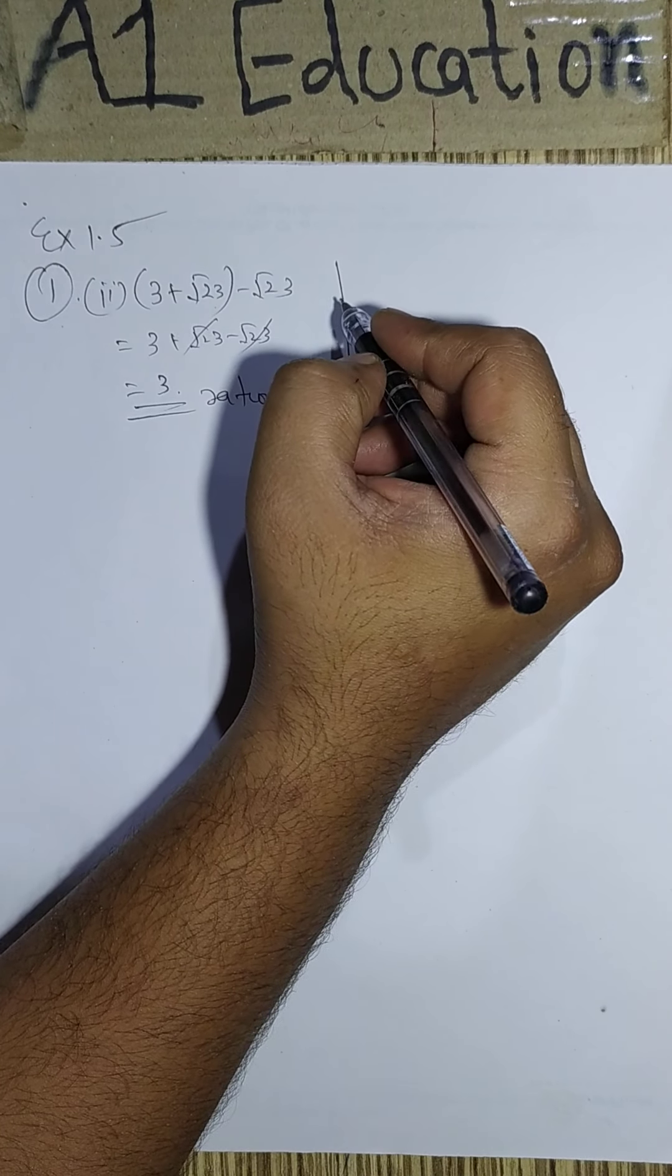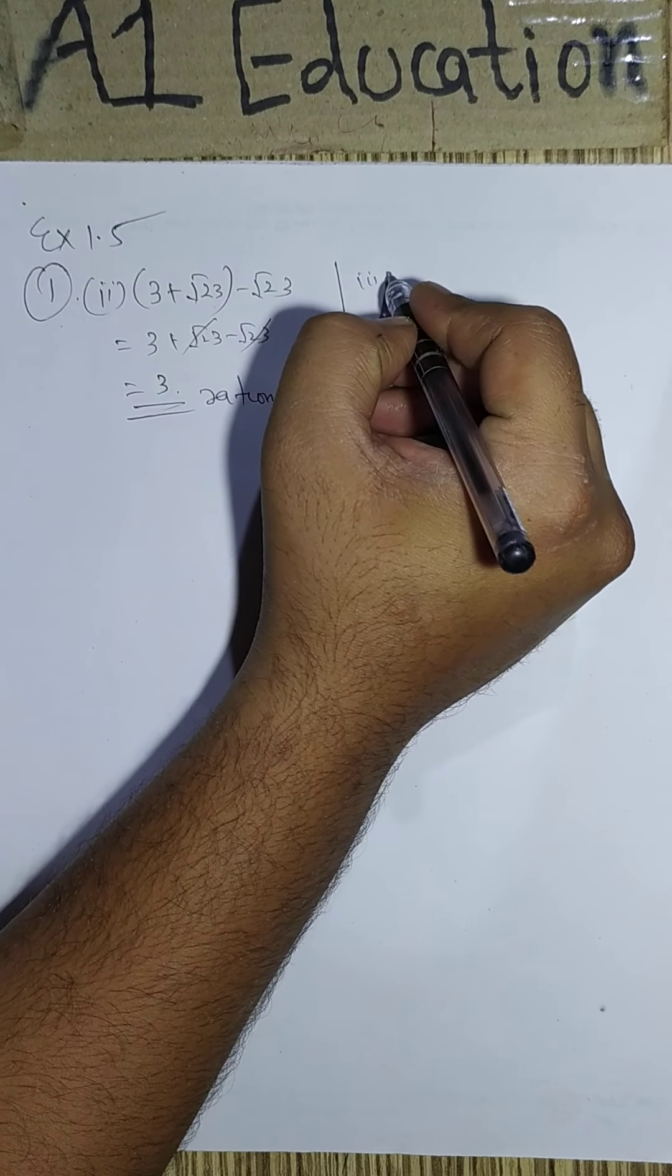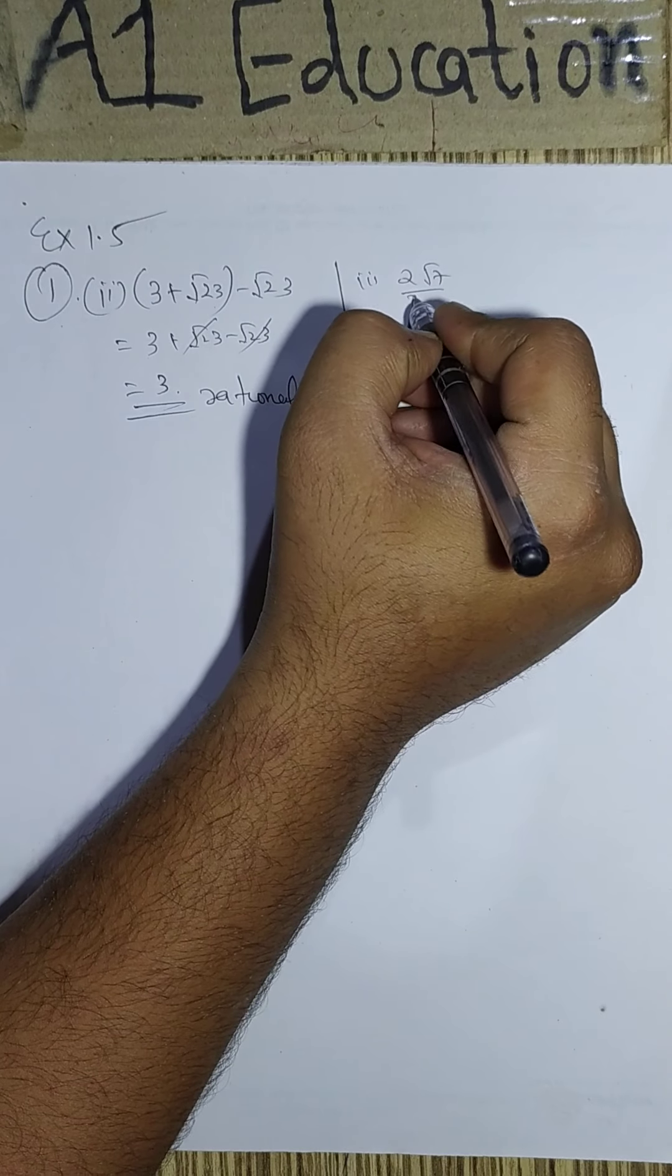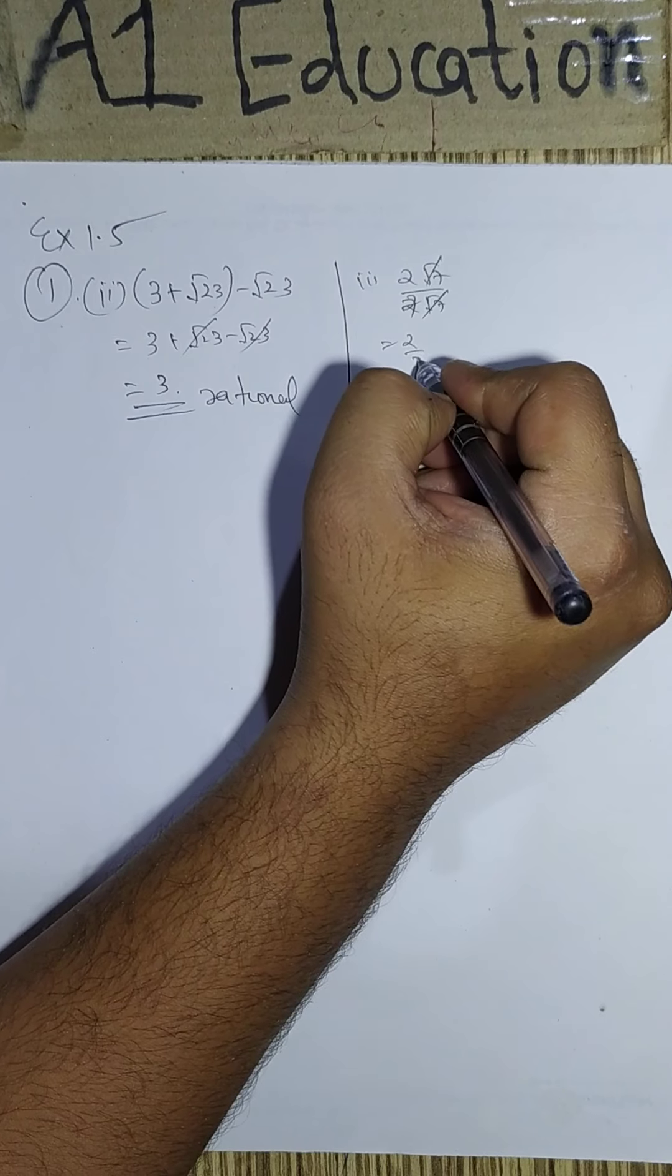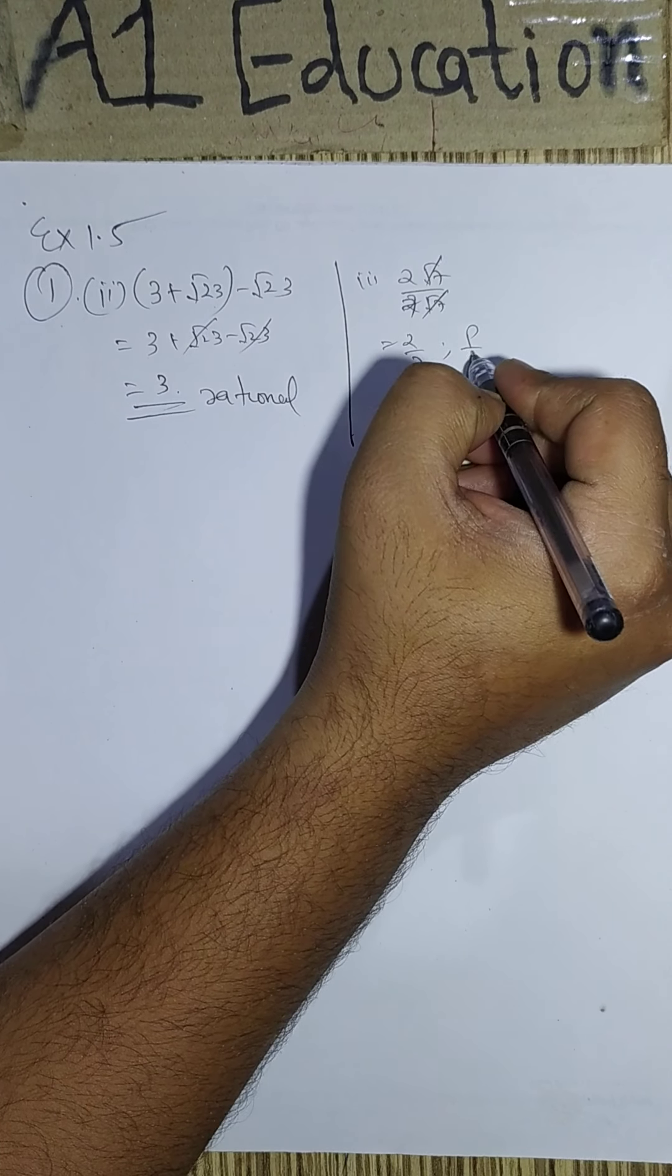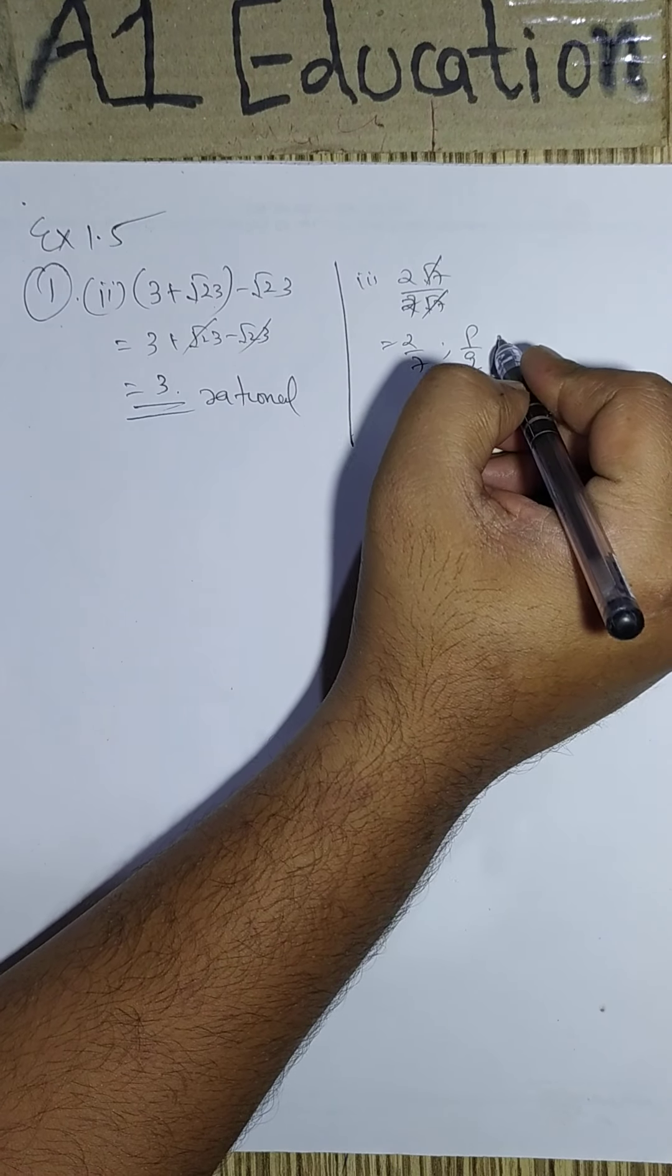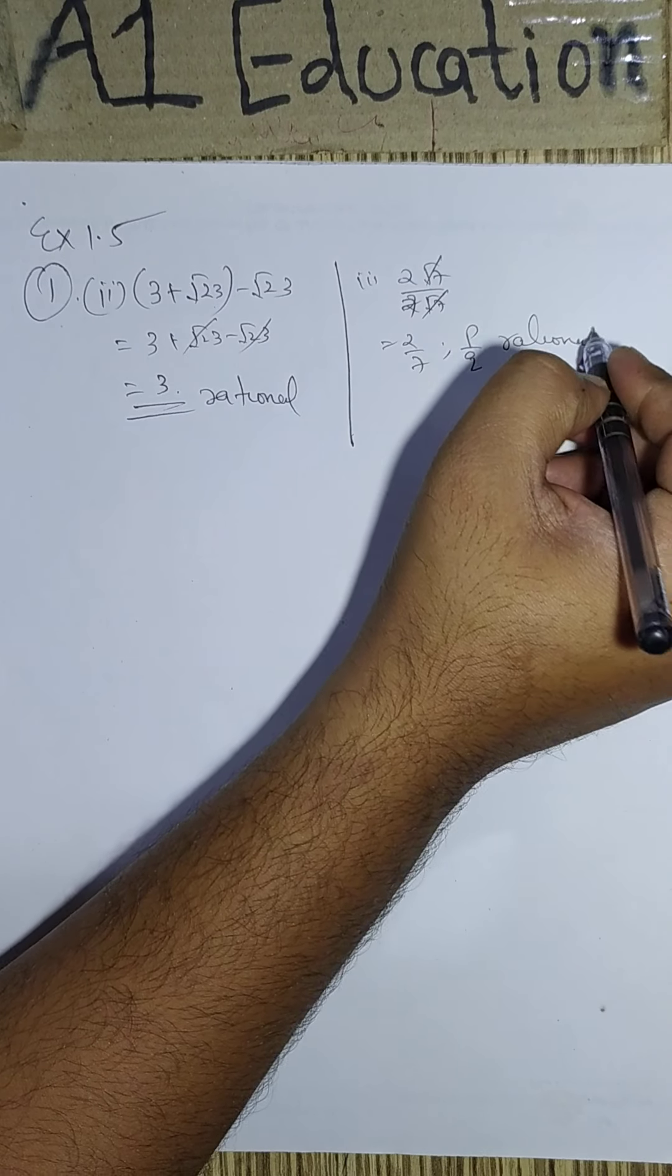Another one which we take is 2 root 7 by 2 root 7. Again on simplification, this gets cancelled out. Remaining is 2 by 7. Since it is in P upon Q format, we call this one as a rational number.